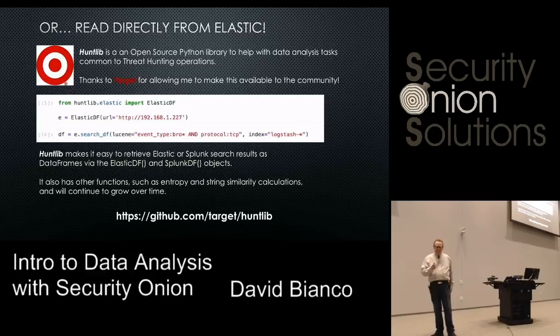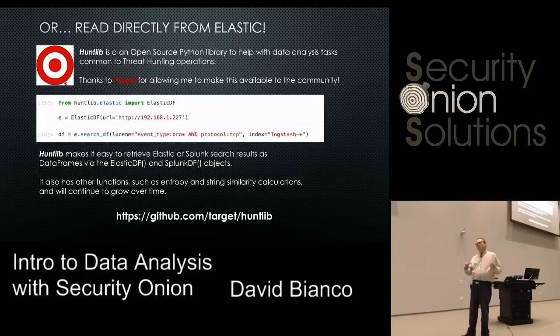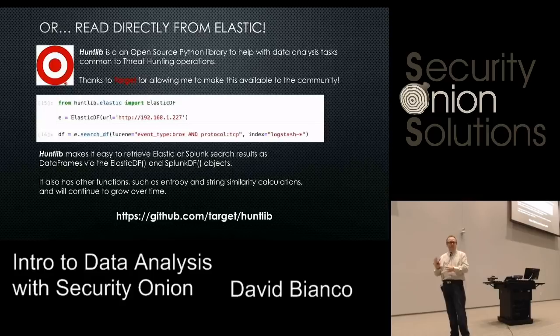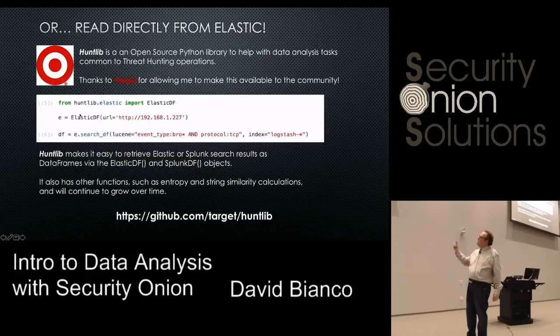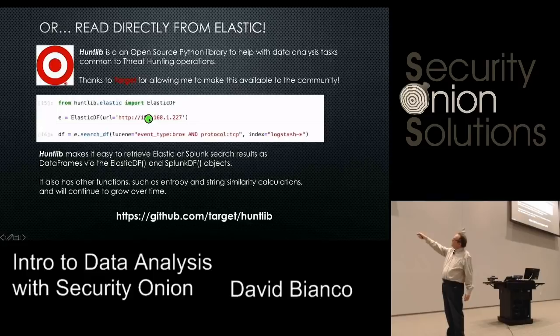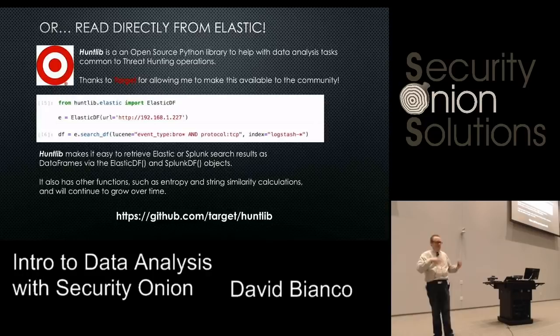HuntLib has a bunch of different functions — it can tell you how far apart strings are, their edit distance, how similar they are, and it can tell you entropy. What we care about for today is it has this ElasticDF. You take three lines: from huntlib.elastic import ElasticDF, construct the ElasticDF with just the URL to your elastic server, and you can do a search with the same Lucene query you'd type into Kibana, specifying which index you want. It returns a pandas DataFrame.